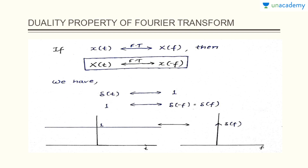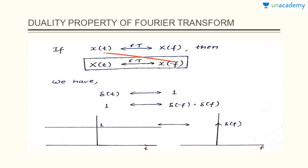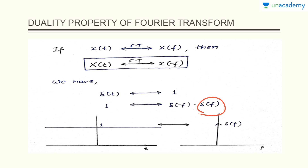Let's start with the duality property of the Fourier Transform. It states that if the Fourier Transform of a signal x(t) is X(f), then the Fourier Transform of the signal X(t) will be nothing but x(-f). That is, just the time reversal of the function x(t) in the frequency domain. So, we have calculated the Fourier Transform of the impulse function as 1.